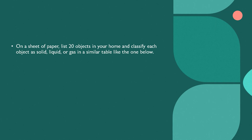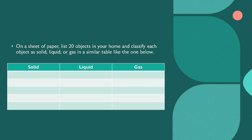On a sheet of paper, list 20 objects in your home and classify each object as solid, liquid, or gas in a table like the one shown.